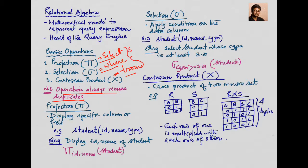The Cartesian product corresponds to the FROM clause of SQL, so these three operations represent the three main clauses. For the projection operation, we display specific columns or fields. Mathematically, we use the pi notation to represent projection. For example, given a student relation with columns ID, name, and CGPA, if our query is to display ID and name of students, we write: project ID, name from the relation student.